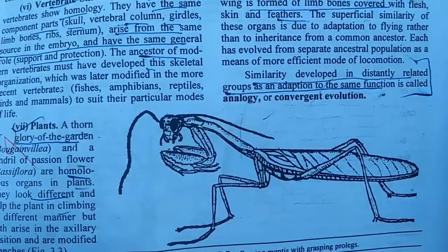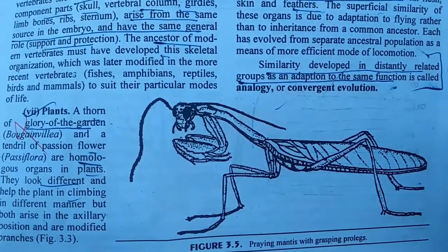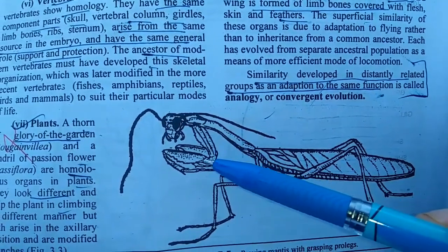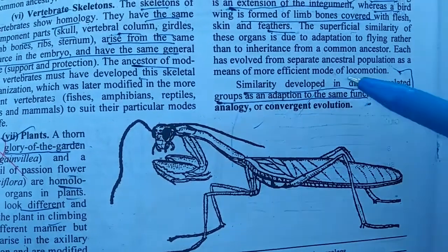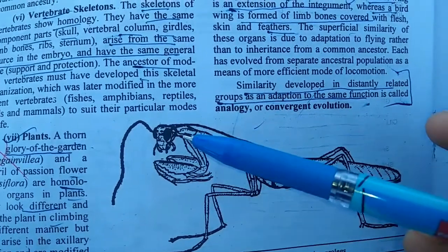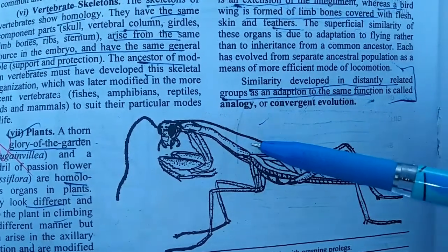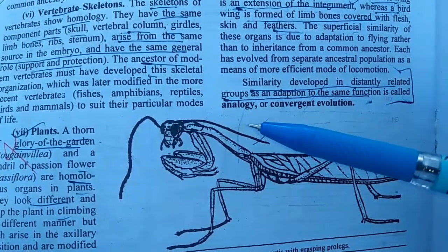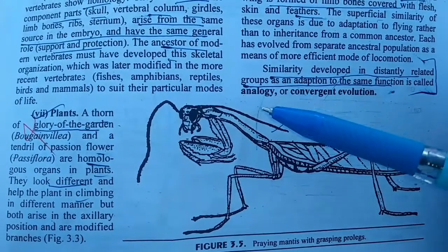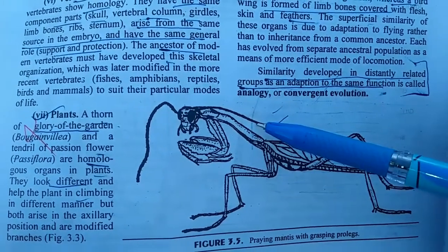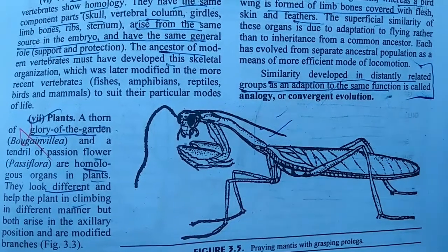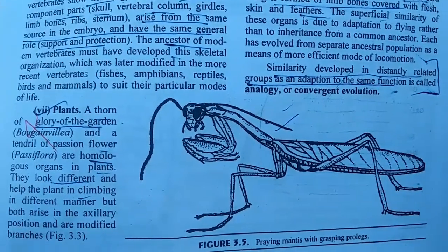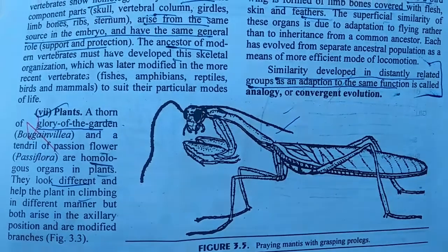The next example is the grasping mechanism of the praying mantis and the human. The praying mantis and human grasp food in a similar way, rolling up the food particles into food boluses and engulfing it. But they are different in embryonic origin and classification. The praying mantis belongs to the non-chordate insects, while humans belong to the vertebrates, mammals. These are also analogies.